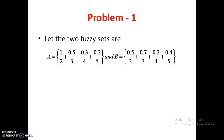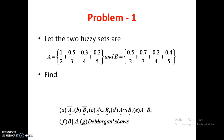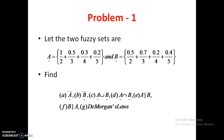There are two fuzzy sets given and we need to find: first, A bar (complement of A); second, B bar (complement of B); third, A union B; fourth, A intersection B; fifth, A difference B; sixth, B difference A; and finally, we need to verify De Morgan's laws. Once you know how to solve all these things, you can solve any problems on fuzzy sets.